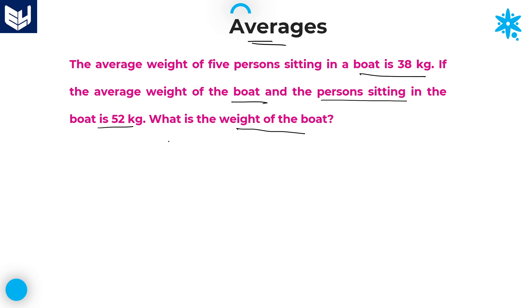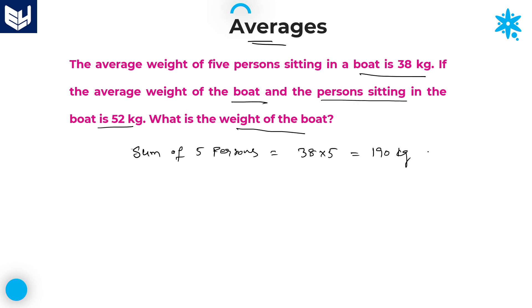This kind of problem is very simple — only one step you need to write. According to the question, the average weight of 5 persons sitting in a boat is 38 kgs. So the sum of 5 persons equals average into number of persons, which is 38 × 5 = 190 kgs.